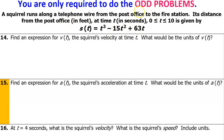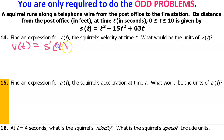We're only required to do the odd problems, but I'm going to go ahead and do number 14 as well, because it will help us do number 15. So find an expression for v(t), the squirrel's velocity at time t. We know that velocity is the derivative of the position function. So using the power rule, that's going to be 3t² minus 30t plus 63.